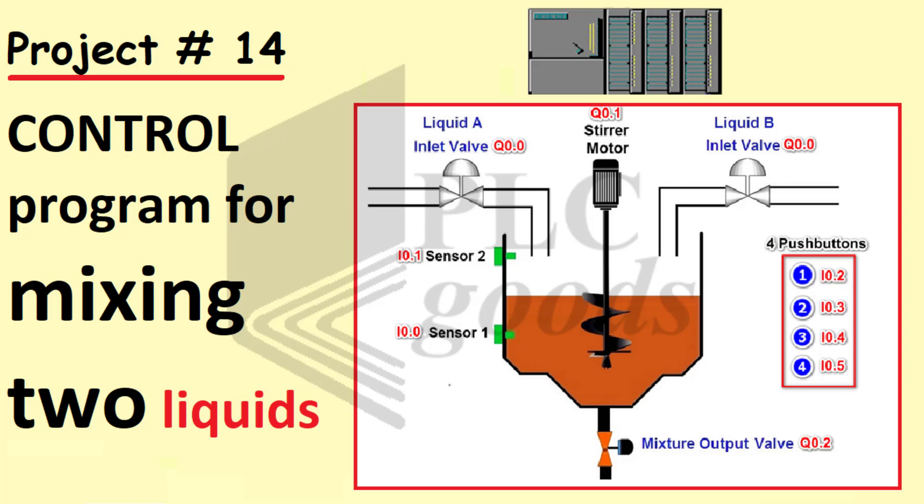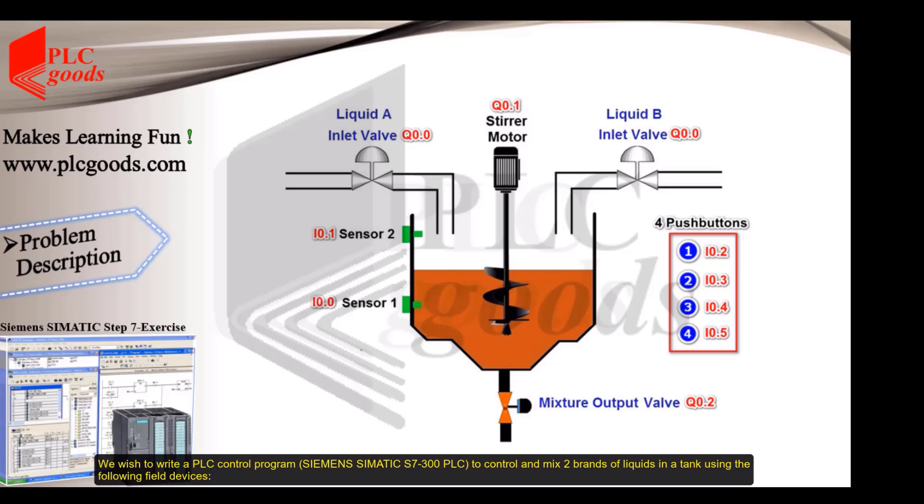Project number 14: Control program for mixing two liquids. Problem description: We wish to write a PLC control program using Siemens SIMATIC S7-300 PLC to control and mix two brands of liquids in a tank using the following field devices.